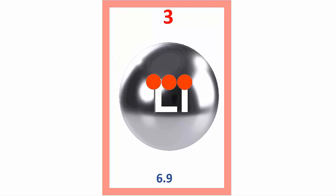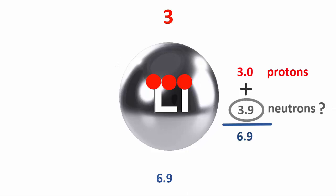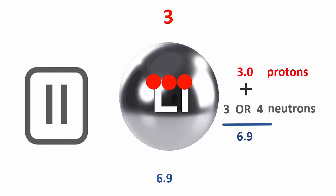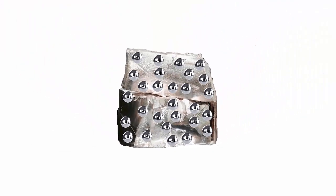Lithium's a bit trickier. It's got three protons, weighing three. But its atomic mass is 6.9. Does that mean it has 3.9 neutrons in its nucleus? But neutrons can't come in fractions. It's got to be either three neutrons or four neutrons. What's going on here? Can you think of anything?